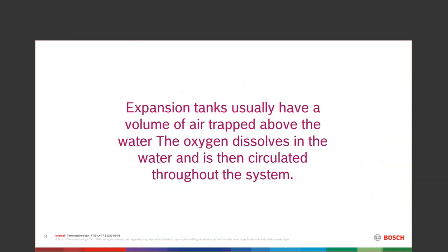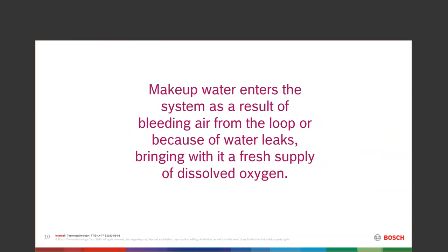Expansion tanks have a volume of air trapped above the water — whether a bladder-type tank or a direct air-to-water tank. That oxygen can actually get through the rubber membrane of the bladder and come out into the water. As we heat it, those little bubbles get big, we get noise and corrosion through oxidation. When we bleed air from a loop or have a small leak, we bring in a fresh supply of dissolved oxygen. We've got to get rid of that or maintain the system so we don't have to constantly address it.